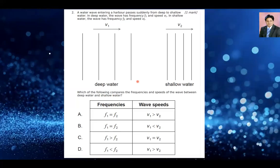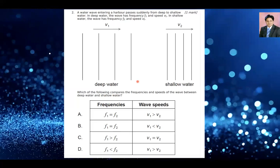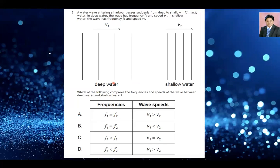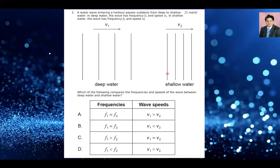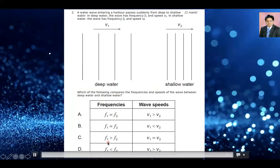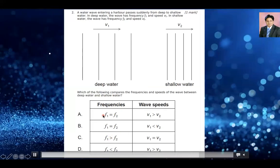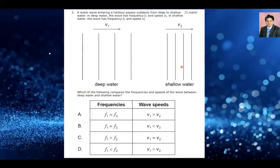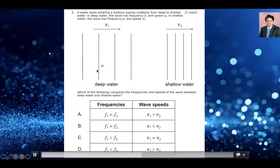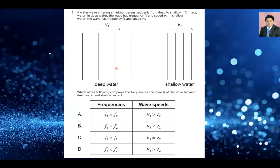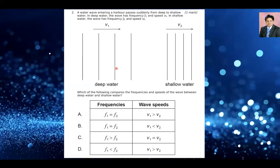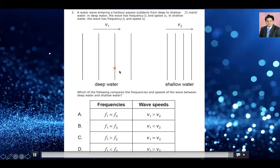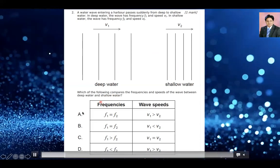The first thing you need to know is that the frequency never changes when the wave passes from one medium to another — the frequency remains the same. So options C and D are eliminated. Now, shallow water is denser compared to deep water because the water layers are pretty close together. As per the laws of refraction, a wave slows down in the denser medium, so the velocity in deep water is greater than in shallow water. So option A is the right answer.